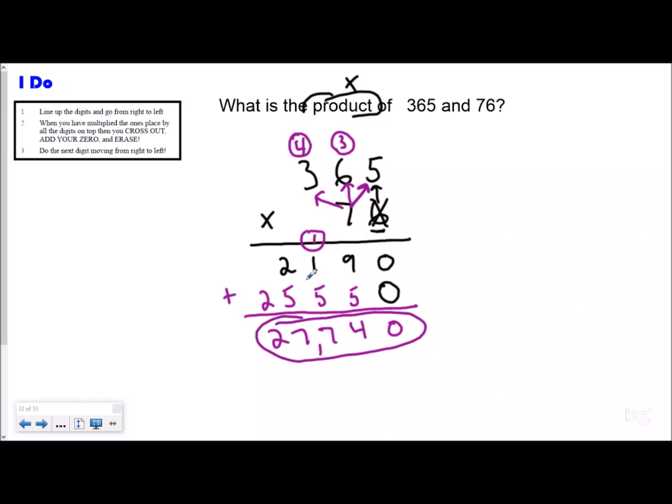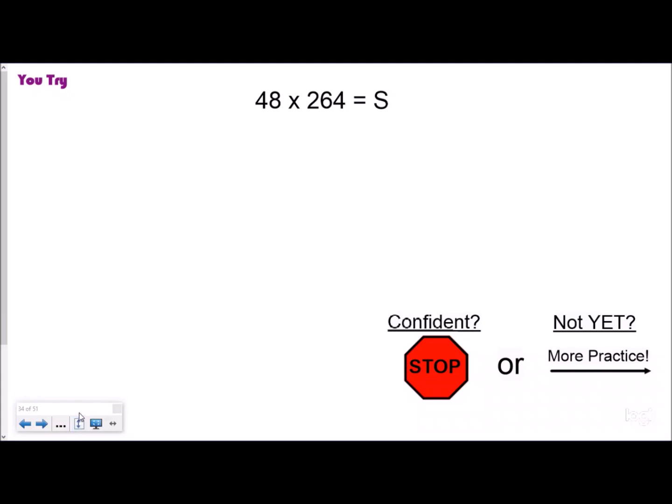Go ahead and do the you try. You can pause the video, try it out, and then check your answer. Make sure you use commutative property to write your bigger factor on top. We're going to do 264 times 48.